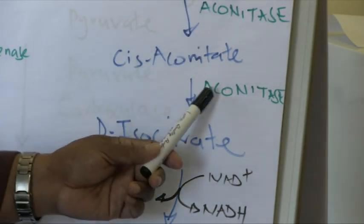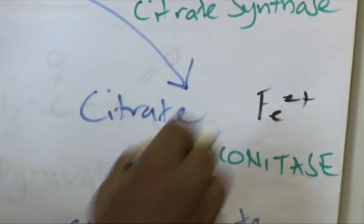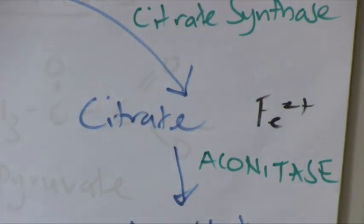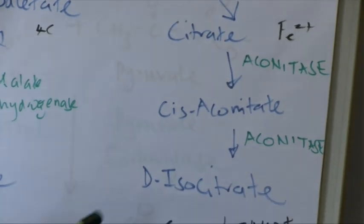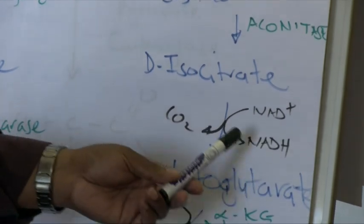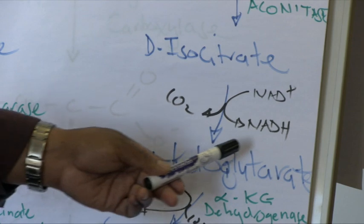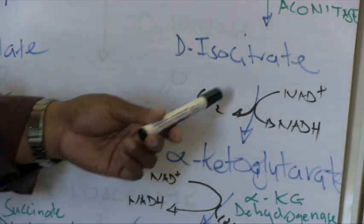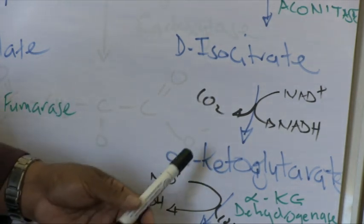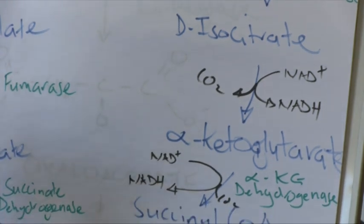From a medical biochemistry perspective, it's important to emphasize that the enzyme aconitase is iron-dependent. In iron deficiency, this enzyme's activity would be significantly reduced. Once isocitrate is formed it is converted to alpha-ketoglutarate — we have another decarboxylation reaction and the generation of NADH from NAD+. This NADH will also enter complex one of the electron transport chain. Alpha-ketoglutarate is now a five-carbon compound, and please remember it is the only five-carbon compound in the TCA cycle.